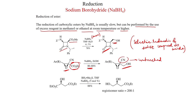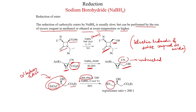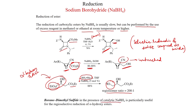A combination of catalytic sodium borohydride (5 mol%) and borane-dimethyl sulfide is particularly useful for the regioselective reduction of alpha-hydroxy esters. In a compound with two ester groups where one is alpha to a hydroxy group, only that alpha-hydroxy ester is reduced to the alcohol, with a regioisomeric ratio of 200:1, demonstrating very high regioselectivity in THF solvent.